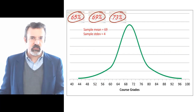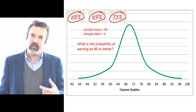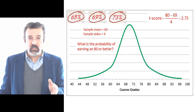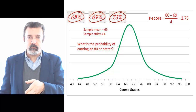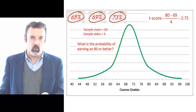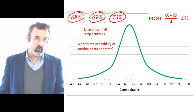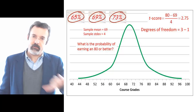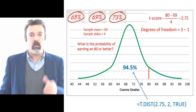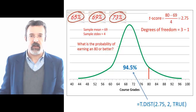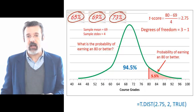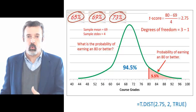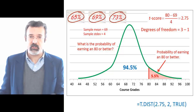Returning to the problem of estimating the probability of earning a B or better in a course, we have three observations and want to know the probability of earning an 80% or better. The T score is 80 minus the mean of 69, divided by the standard deviation of 4, which equals 2.75. We have three observations, so degrees of freedom is 3 minus 1, or 2. The area to the left of 80% is 94.5%, which means the area to the right is 5.5%. We estimate there is a 5.5% chance of any given student earning an 80% or better in this course, based on the three observations we have.